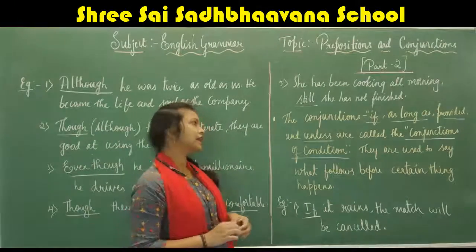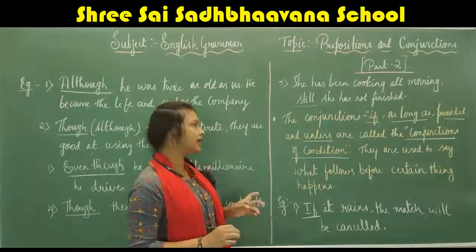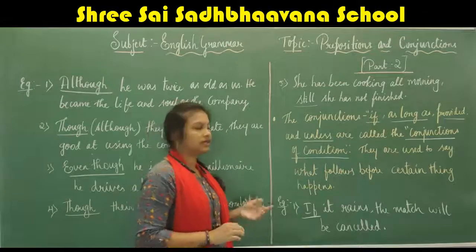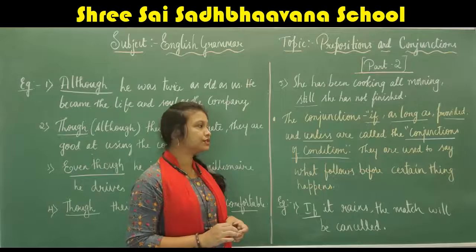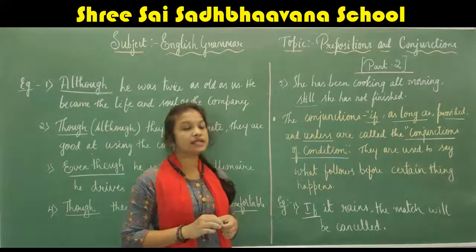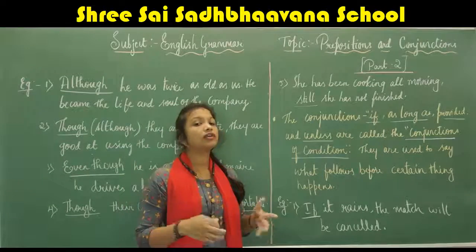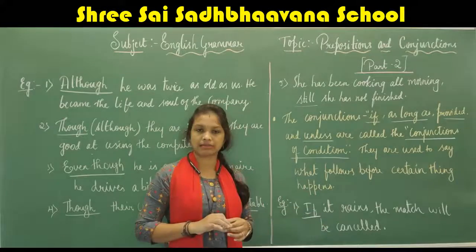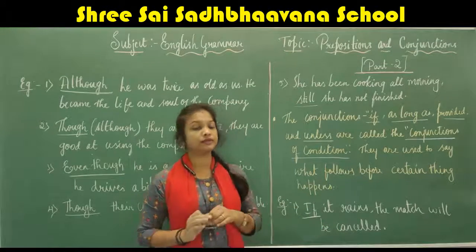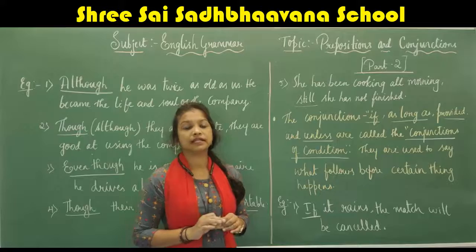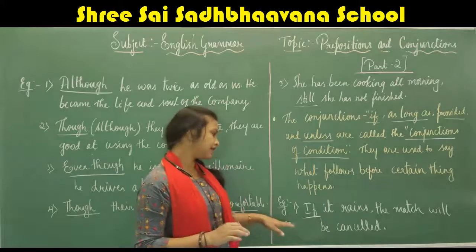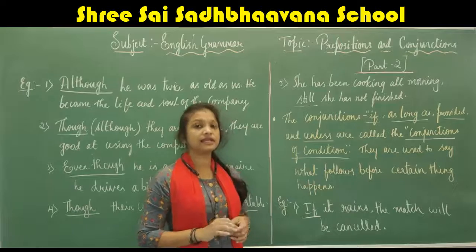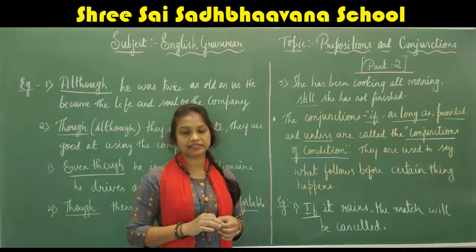The conjunctions 'if', 'as long as', 'provided', and 'unless' are called conjunctions of condition, because they are used to say what follows before a certain thing happens. Example: 'If it rains, the match will be cancelled.' The conjunction 'if' tells what happens before the match is cancelled.